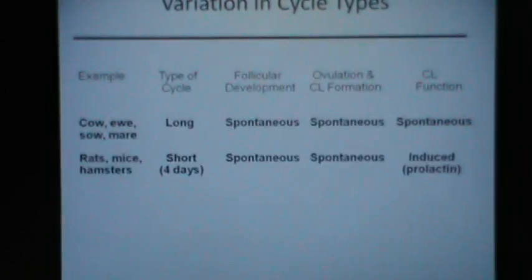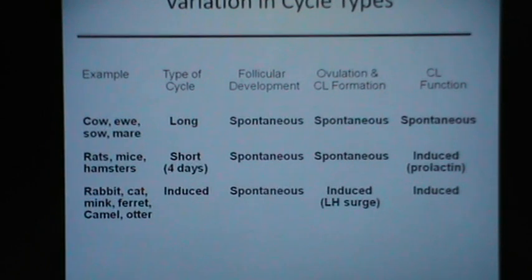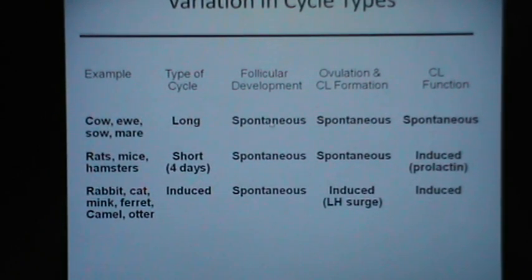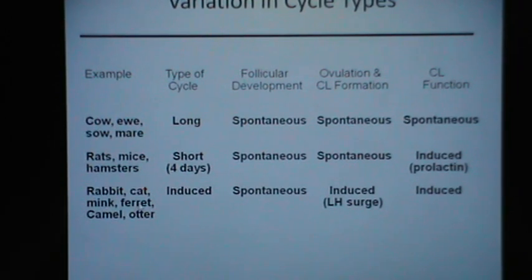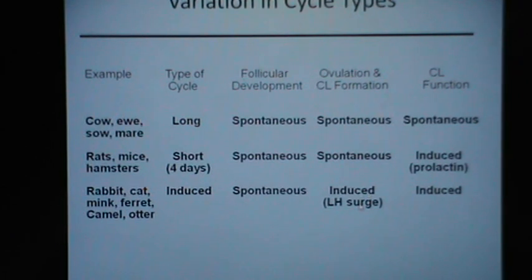There is variation in cycle types in different farm animals. In cattle, ewes, sows and mares, the type of cycle is long; follicular development, ovulation, CL formation and CL function are all spontaneous. In rats, mice and hamsters, the cycle is short — only 4 days — follicle development and ovulation are spontaneous, but CL function is induced and dependent on prolactin. In rabbits, cat, mink, ferret, camel and otter, follicular development is spontaneous but ovulation, CL formation and CL function are induced; the LH surge occurs in response to mating.